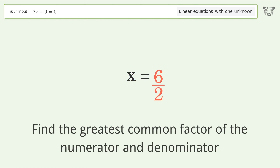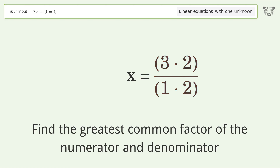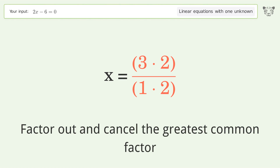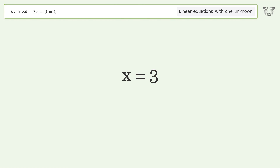Find the greatest common factor of the numerator and denominator. Factor out and cancel the greatest common factor. And so the final result is x equals 3.